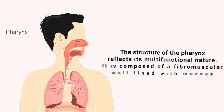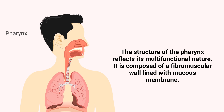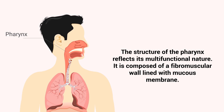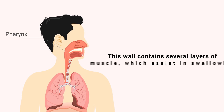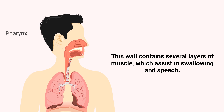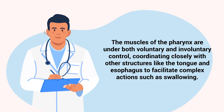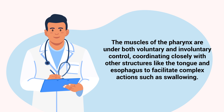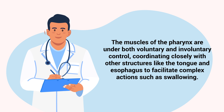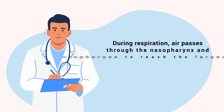The structure of the pharynx reflects its multifunctional nature. It is composed of a fibromuscular wall lined with mucous membrane. This wall contains several layers of muscle which assist in swallowing and speech. The muscles of the pharynx are under both voluntary and involuntary control, coordinating closely with other structures like the tongue and esophagus to facilitate complex actions such as swallowing.